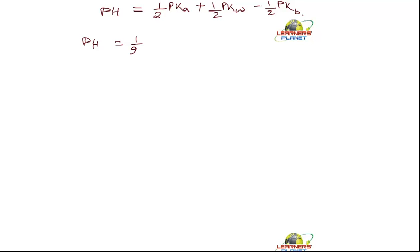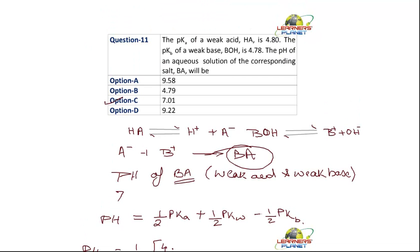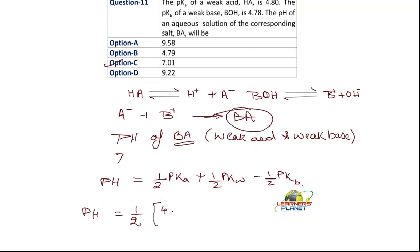Now let's put in the values over here. It is half, take out as common. What is the pKa value? It is given as 4.80 plus pKw is 14 minus 4.78.